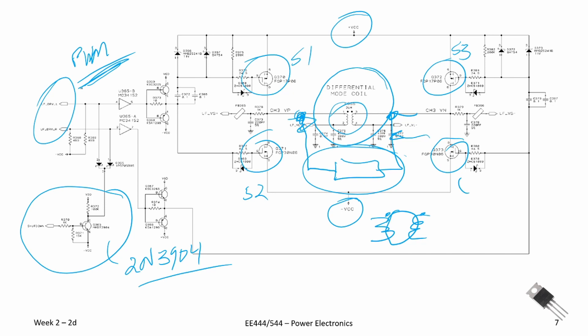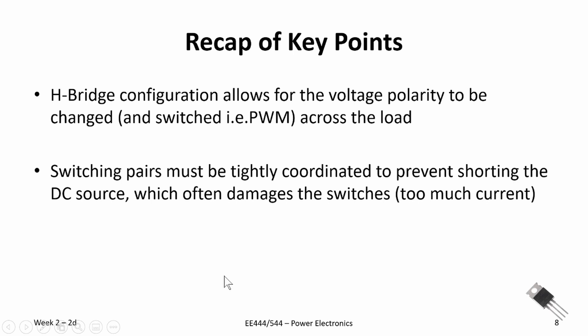So high level application of this. Let's go over the recap on this segment. H-Bridge configurations allow for the voltage polarity to be changed and possibly PWM'd across the load. And then finally, switching pairs must be tightly coordinated so we don't short the DC source, which would damage the switches with high current surges flowing through the switches. Thanks for watching and we'll see you in week three.